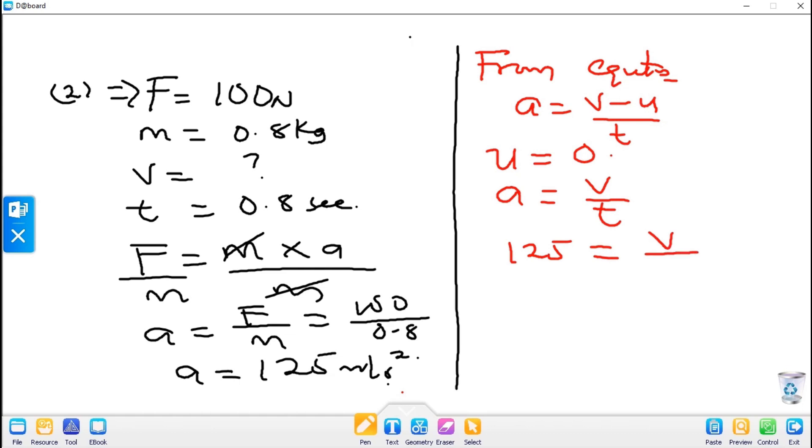To obtain v you cross multiply. Our v becomes 125 multiplied by 0.8, which gives us 100 meters per second. This is the velocity with which the ball was kicked. We made use of equations of motion, which are very important in solving questions that have to do with motion of a body.